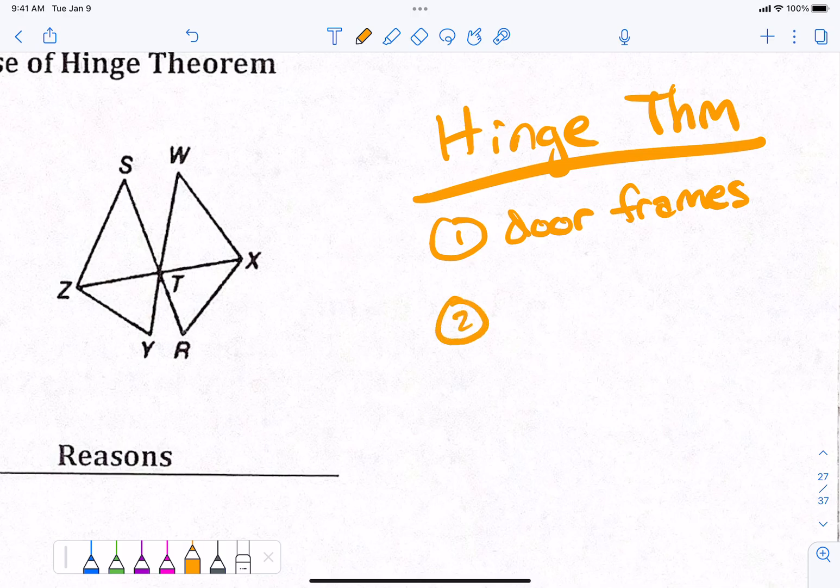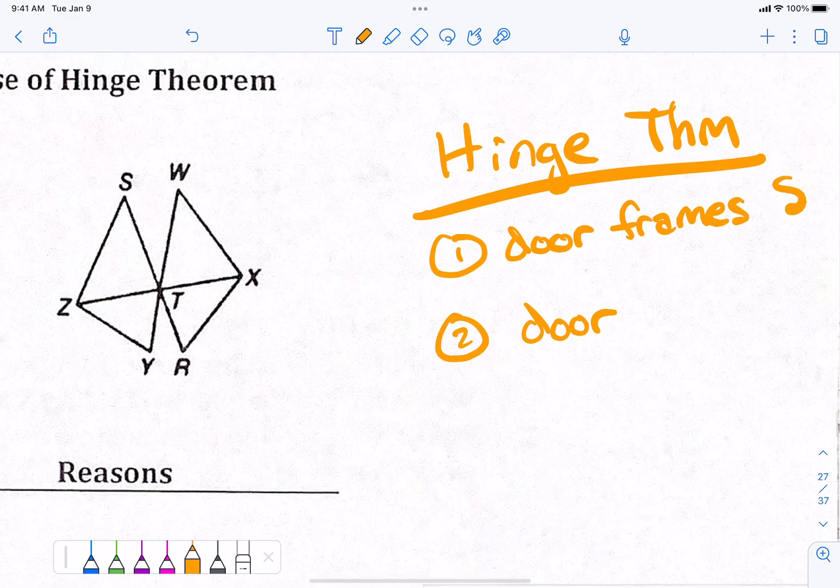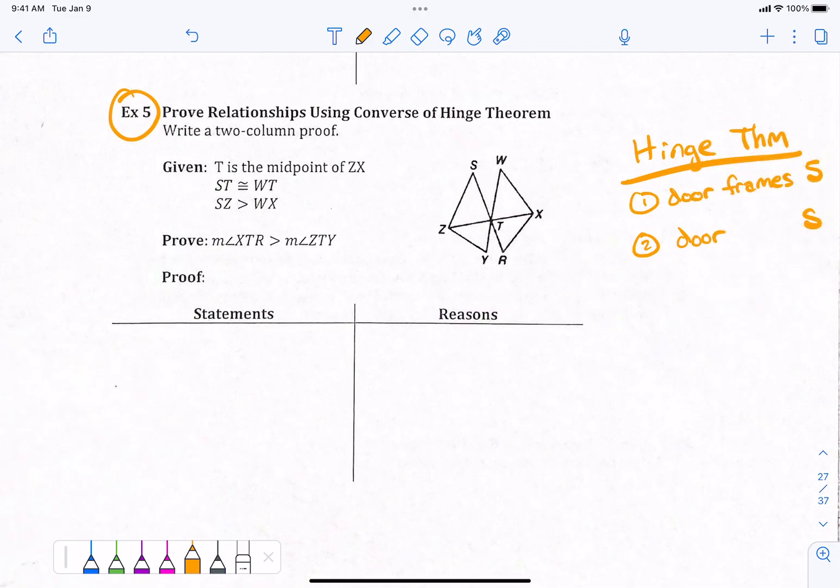The door frames are the same size. Do you guys know what I mean by that? Like, one side matches. Okay? The second thing I need to do is make sure that another side matches. So, like, the door is the same size. So, I need to basically have two sides that are touching each other that match up for one triangle and the next triangle. Like, I have to be comparing the same size door and the same size frame. Right? Like, that has to work in order for the hinge theorem to even take place. Okay? So, here we go.